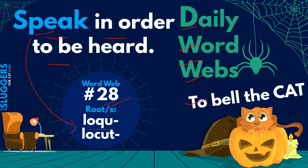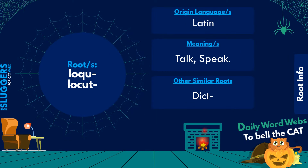The root is LOC, LOQU, or LOCUT — L-O-C-U, L-O-Q-U, or L-O-C-U-T. These roots have their origin in the Latin language and stand for 'to talk' or 'to speak.' There are other similar roots like DICT, which we shall cover in upcoming episodes.